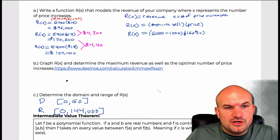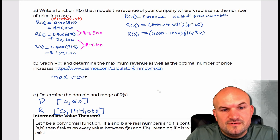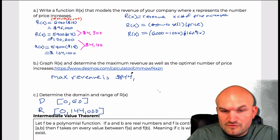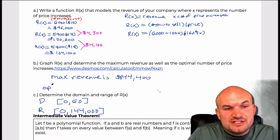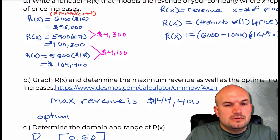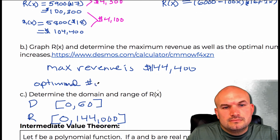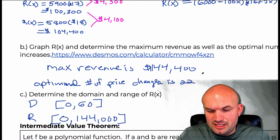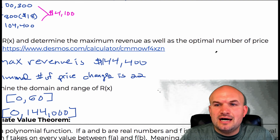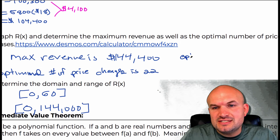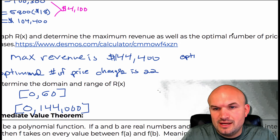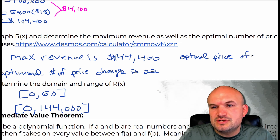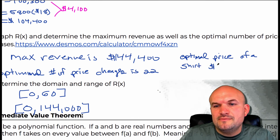The maximum revenue is $144,400. The optimal number of price changes is 22. And the optimal price of a shirt — if we do 22 price increases starting at $16, that's 16 plus 22 equals $38. So the optimal price of a shirt is going to be $38.